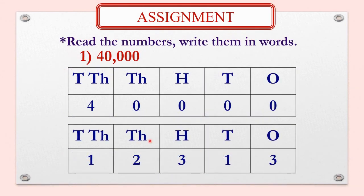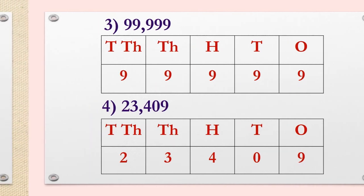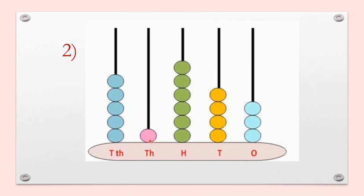This is your assignment. Read the numbers and write them in words: First, 40,000. Second, 12,313. Third, 99,999. Fourth, 23,409. Look at the abacus, count the beads and write the number in words. So students, you have to do practice at your home. In this way, you have understood how to read and write 5-digit numbers.